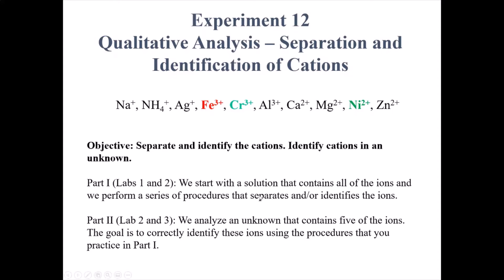In part one, we're going to do that for all of the ions. In part two, we're going to analyze an unknown that contains five of the ions. In the digital experiment setup, you'll get a series of results from the various procedures, and your goal is to correctly identify the ions that are present based on what you observed in part one.